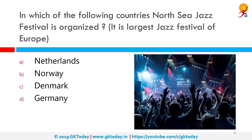In which country is the North Sea Jazz Festival organized? It is the largest jazz festival of Europe. The correct answer is the Netherlands. The North Sea Jazz Festival is an annual festival held each second week of July in the Netherlands at the Ahoy venue. It used to be in The Hague, but since 2006 it has been held in Rotterdam.